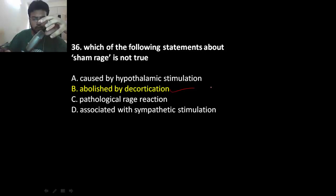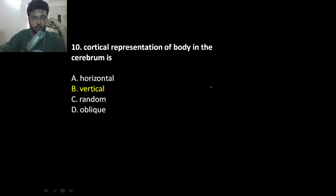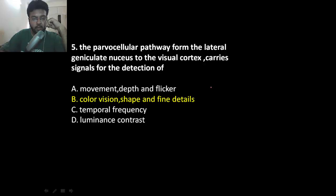Broca's area is concerned with word formation. The cortical representation of the body in the cerebrum is vertical. The lateral geniculate body — L for lateral, L for light — is involved in the visual pathway for color vision, shape, and fine details of an object.